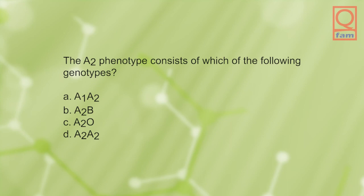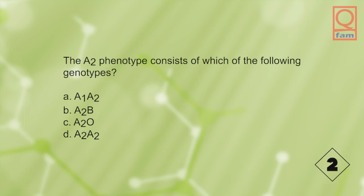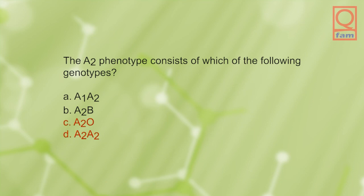The A2 phenotype consists of which of the following genotypes? A) A1/A2, B) A2/B, C) A2/O, D) A2/A2. The answer is C and D, A2/O and A2/A2.